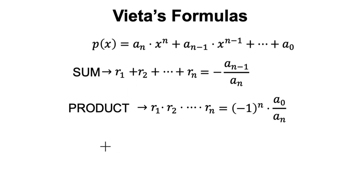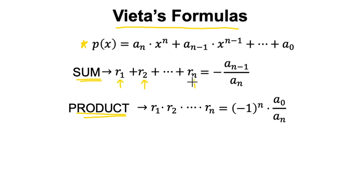Hello, welcome. In this video, we're going to focus on proving Vieta's formulas. These formulas are really useful if you have a polynomial and you want to find the sum and product of the roots. The notation here is talking about the sum of the roots. There are n roots for a polynomial of degree n — that's the fundamental theorem of algebra. And what this is saying is that the sum of those roots is the opposite of the ratio of the second coefficient divided by the leading coefficient.